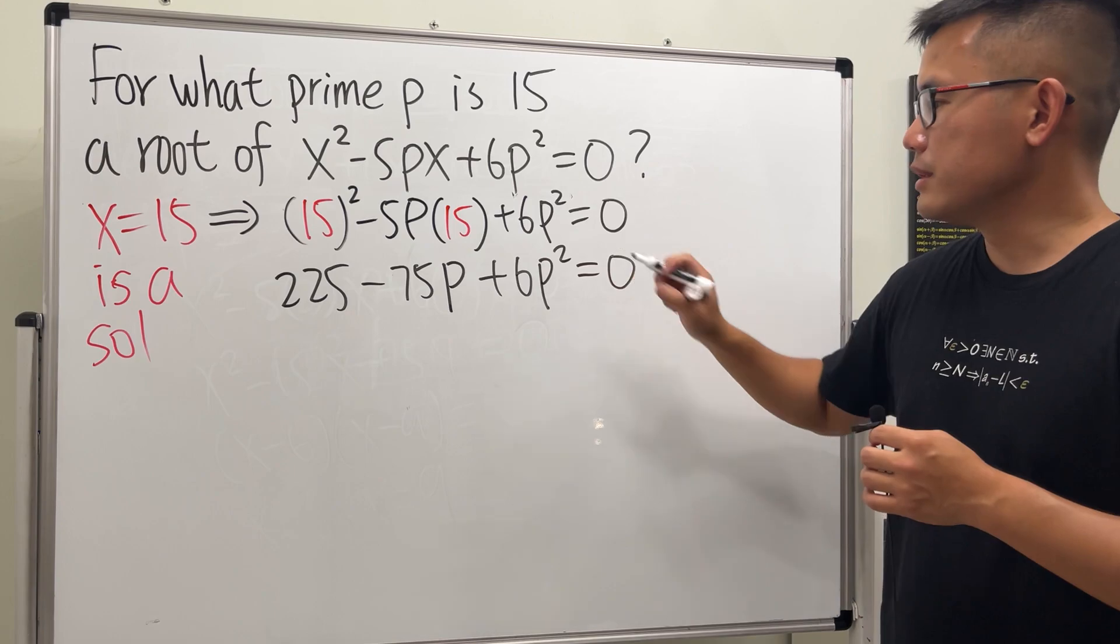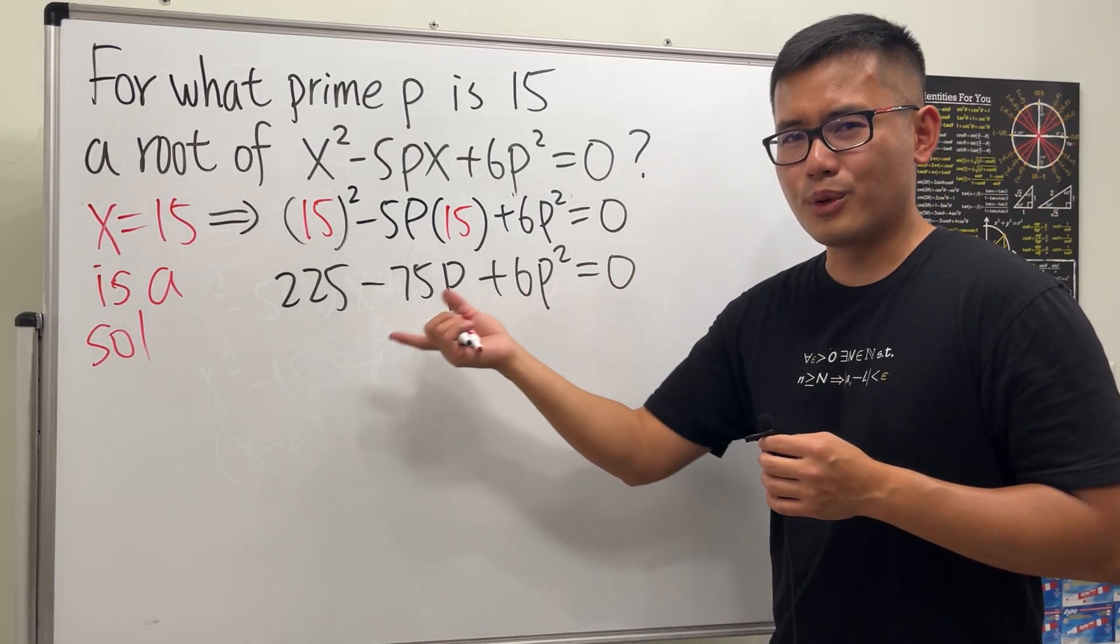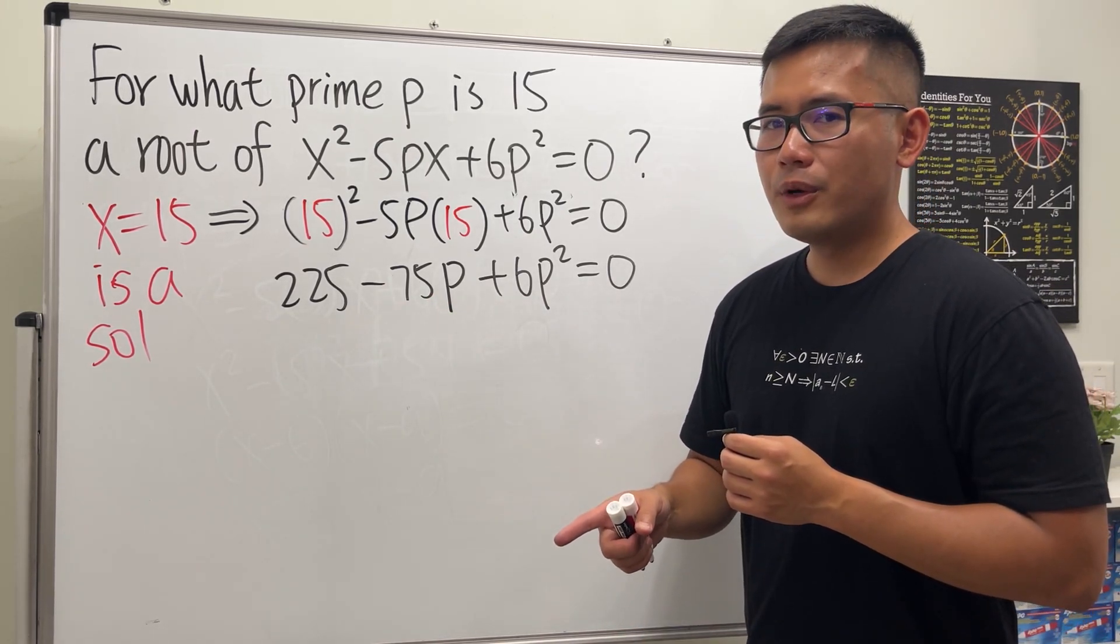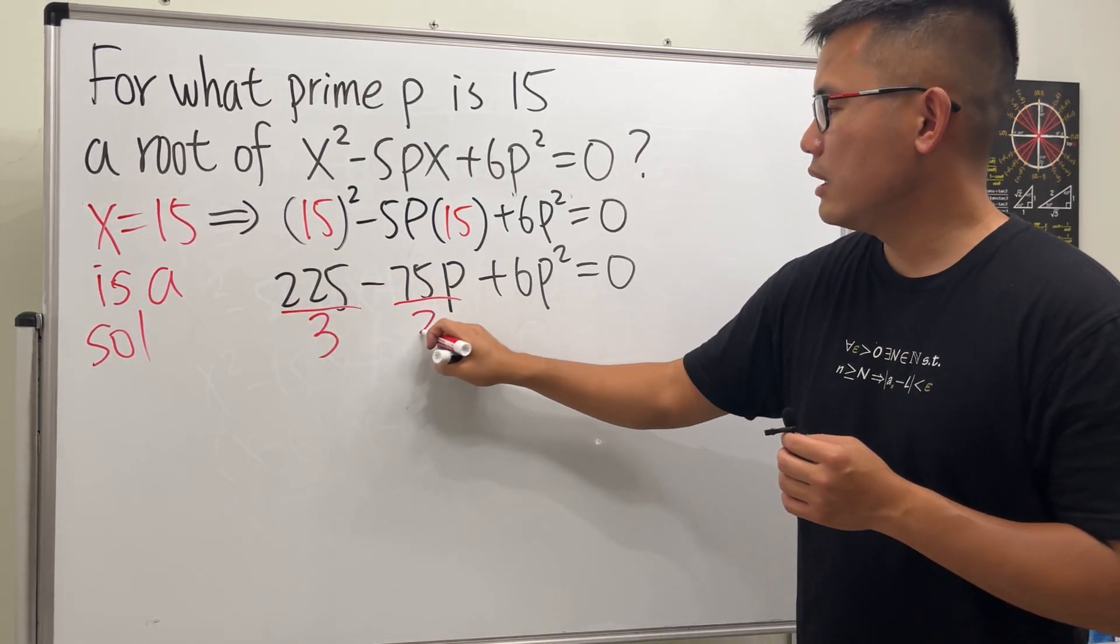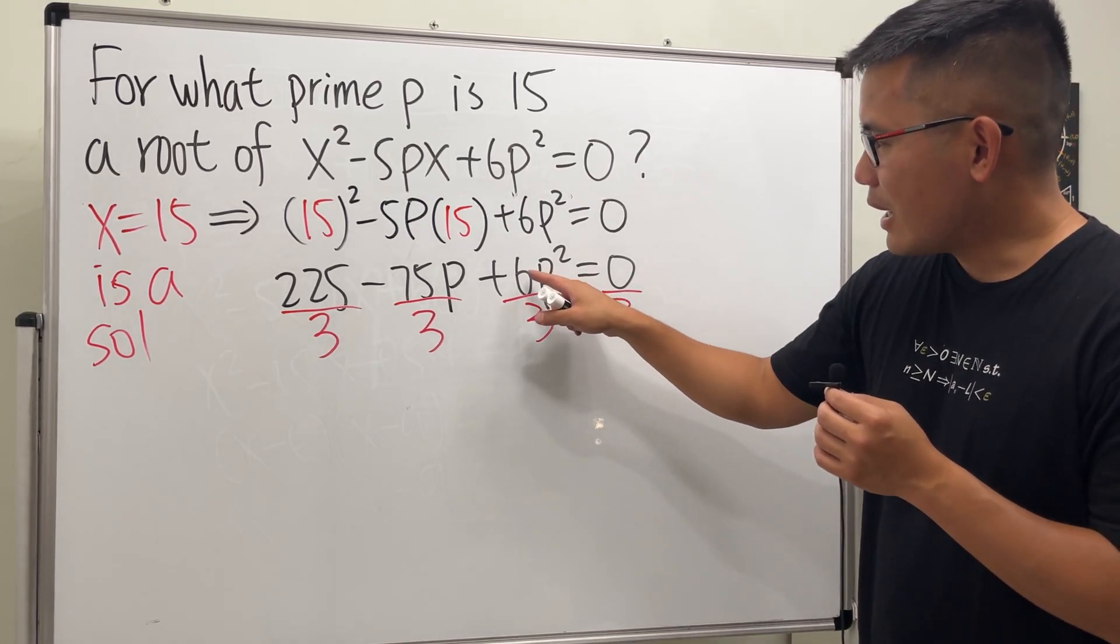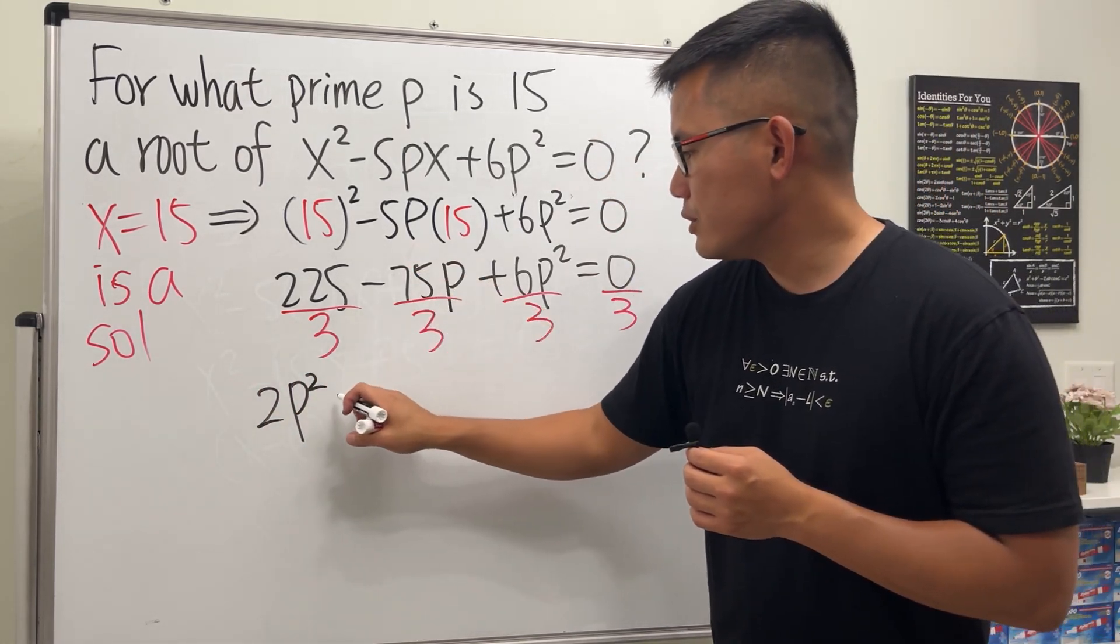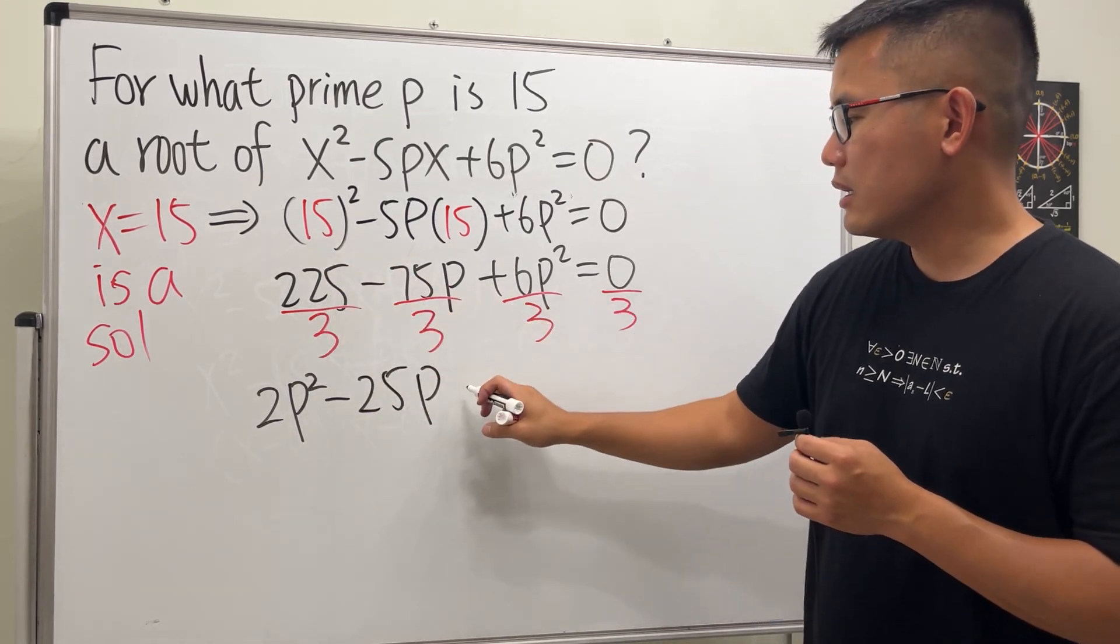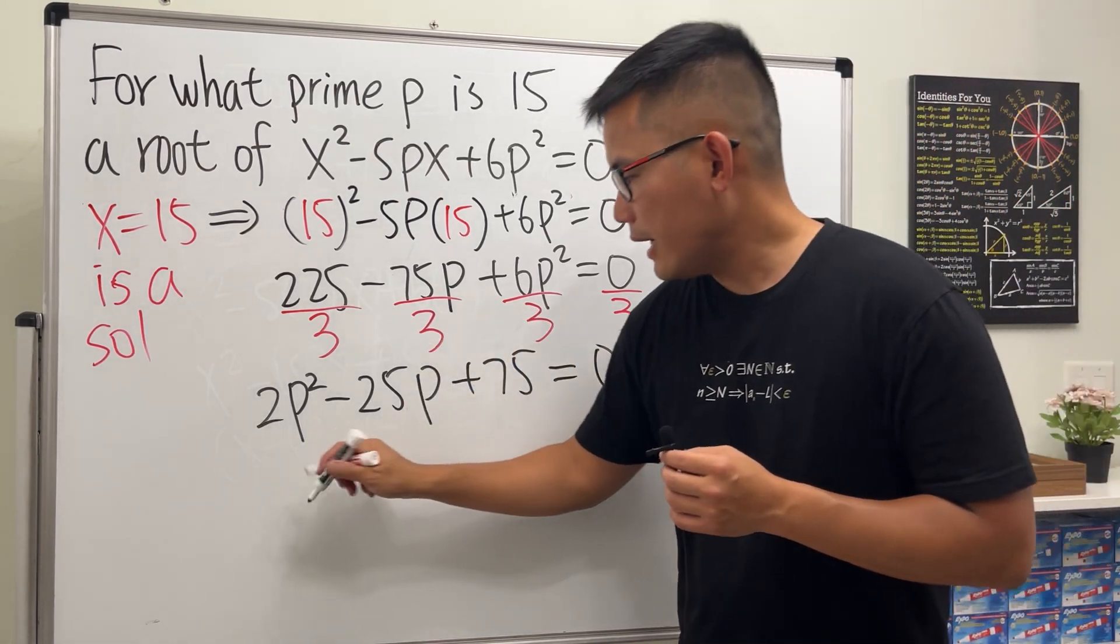We like to have the P² term go first, right? The quadratic term goes first. So I'm going to move it, and in the meantime we can actually divide everybody by 3. This is divisible by 3, likewise this and so is this. Now 6P² divided by 3 we get 2P², this divided by 3 we get -25P, and then this gives us +75, and that equals zero.